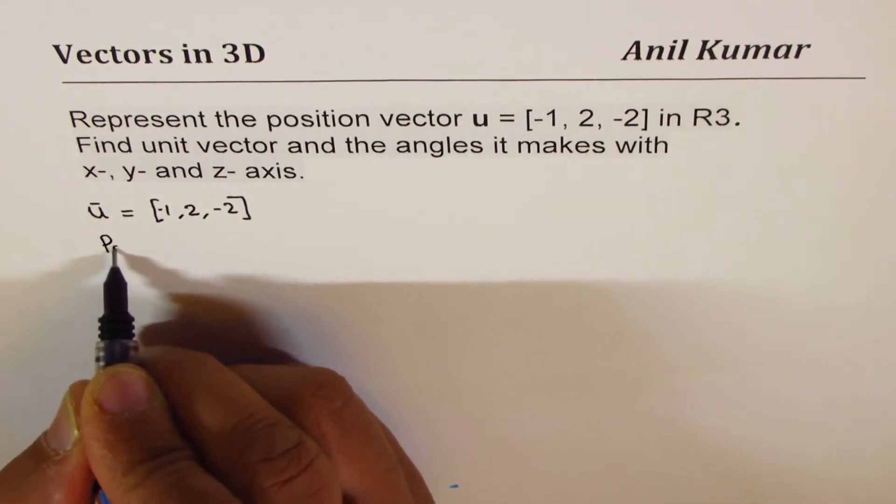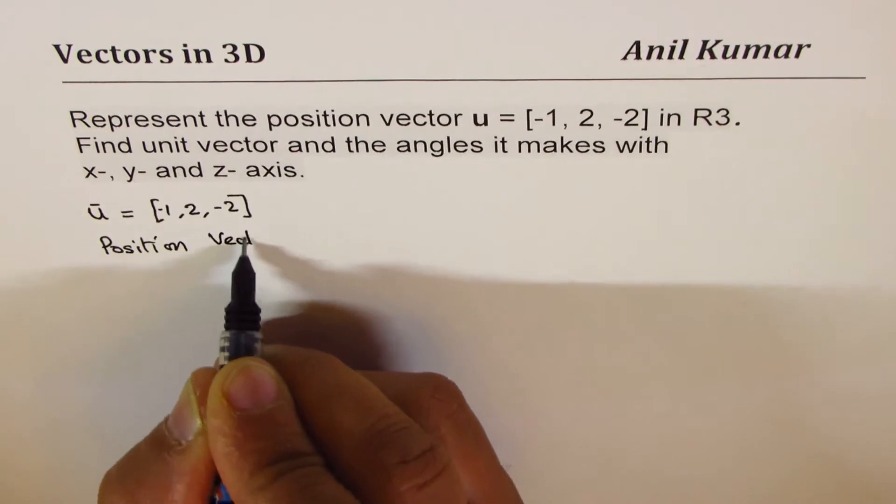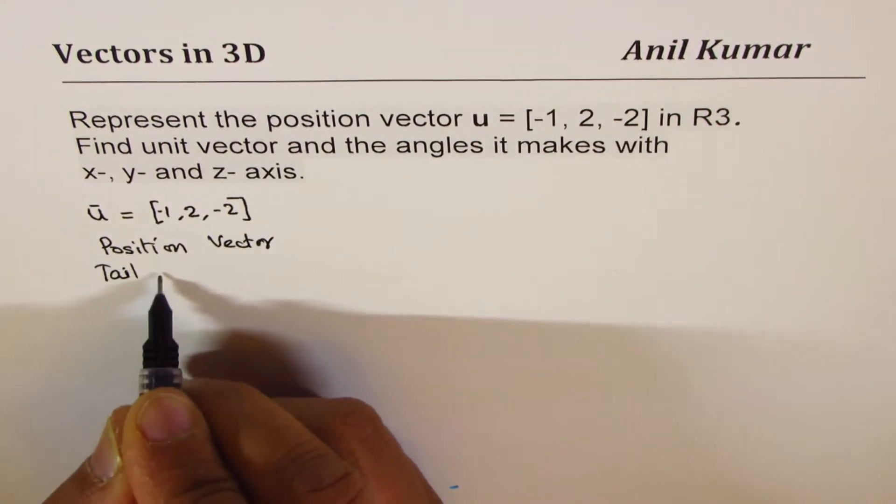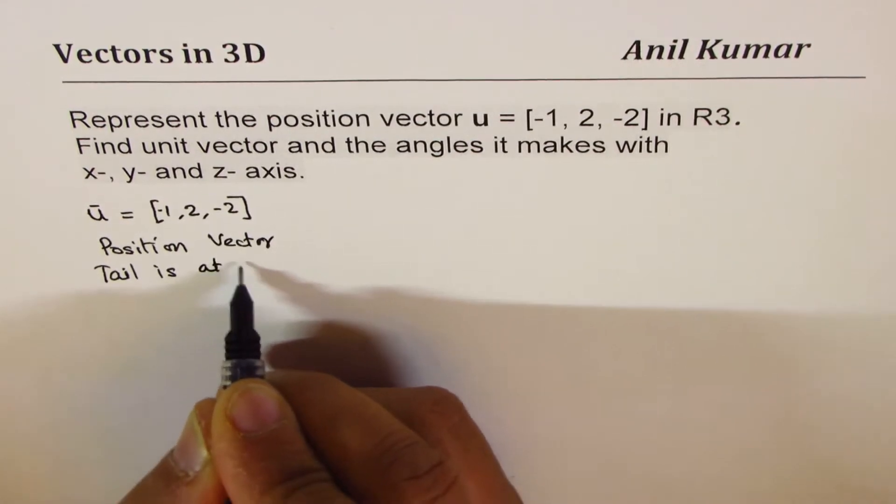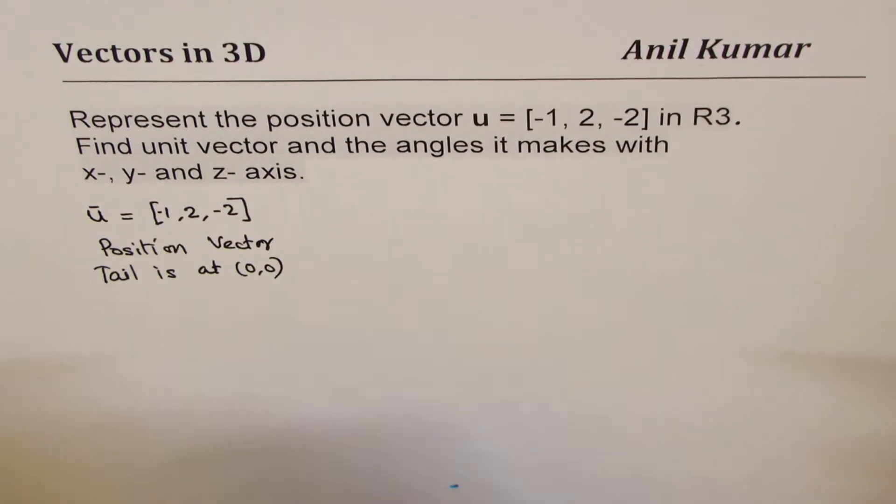When I say position vector, what does it mean? It really means that the tail is at (0,0) origin. That's what it means. Let's see how to do this.